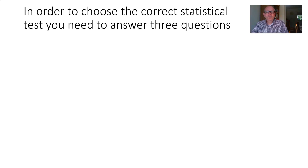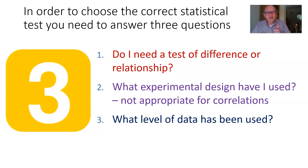So what do we do when we go to select a statistical test? When you've done your study and you've got your data and you want to know if it's significant, you've got to ask yourself three questions. Question number one: am I looking at a test of difference or relationship? Tests of relationships are correlational studies. The second one is: if I'm looking at a test of difference, what's my experimental design? Is it an independent groups design, which is non-related data? Or is it a repeated measures design or matched pairs design, which is related data?